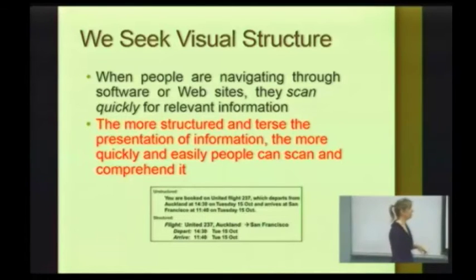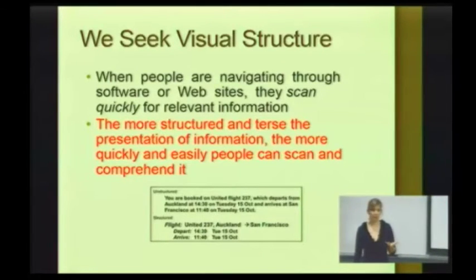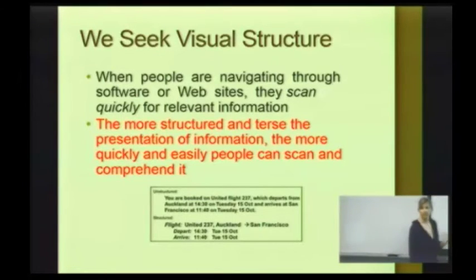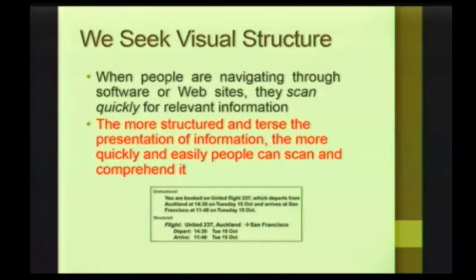Let's look at a quick example. Here we have an example where it's the exact same information. Quickly glancing at it, which is easier for you to quickly glean information from? The bottom one. Why is that? It's broken up into lines, you have formatting, you have less text. Do we like to read? No — unless it's a really good novel. It has less text, we have labels, and it's very clear what the labels are. So this is much easier for us to understand.